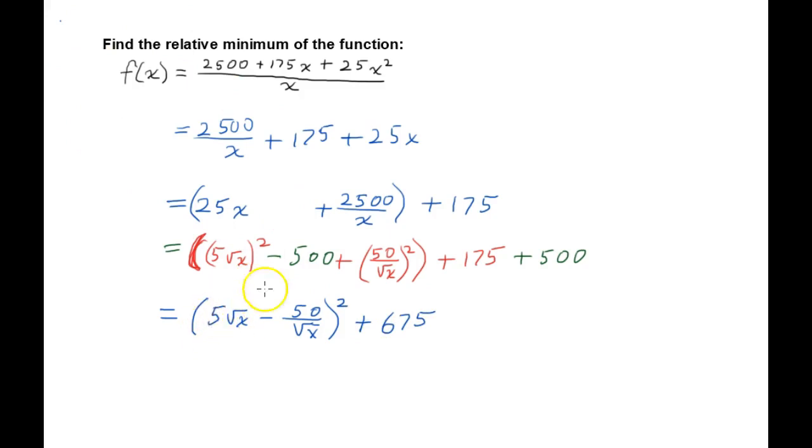Now if we were to foil this, 5 times the square root of x minus 50 over the square root of x multiplied by itself, we wouldn't get 25x plus 2,500 over x. We would have those middle terms which would add up to negative 500. And so that's why I put in the negative 500 here, and of course I have to add it back over here also.